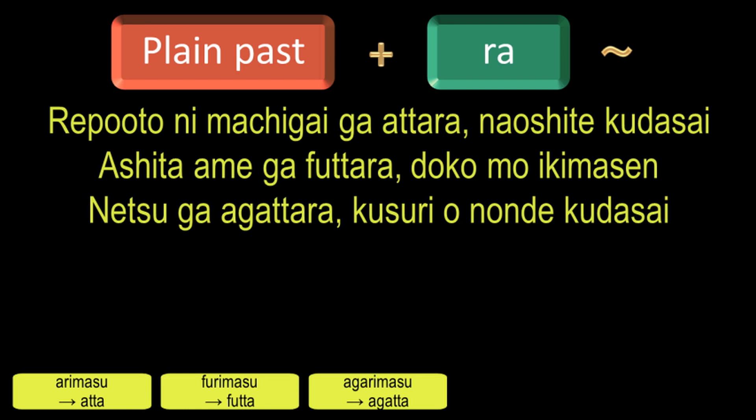The verb Kimasu means to come, and the negative is Kimasen. Its past tense is Kimasen deshita and the plain past form is Konakatta. By adding Ra, we will get the condition Konakattara, which means if something or someone doesn't come.